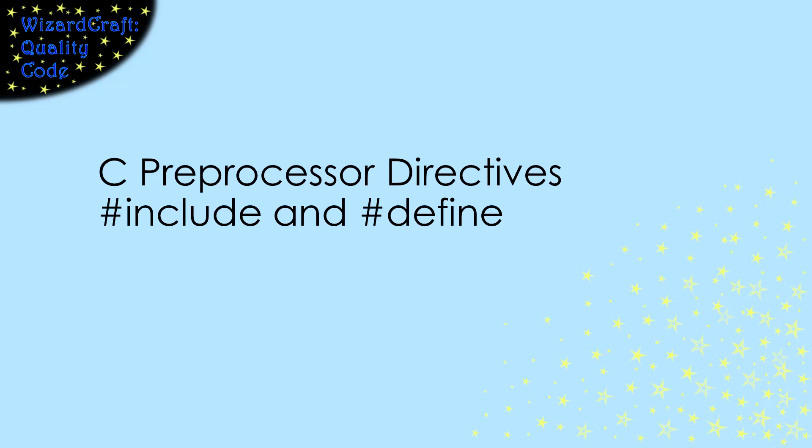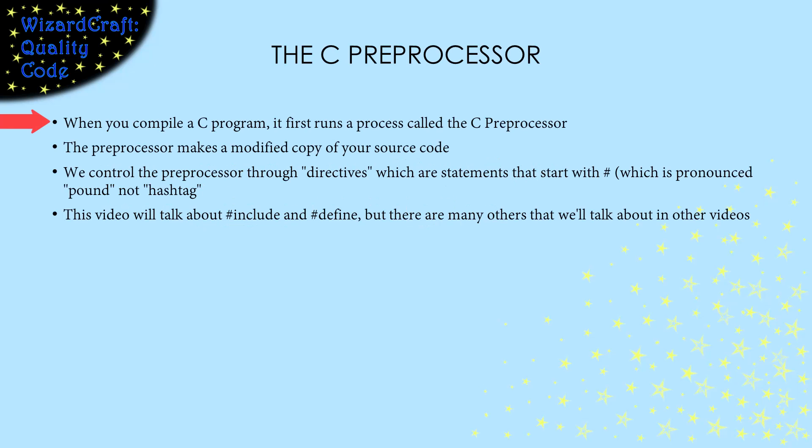The C preprocessor is pretty powerful and can help you write clean code. In this video, I'll talk about how the preprocessor works and the pound include and pound define directives. The C preprocessor is the first thing that happens when you GCC your source code. Its goal is to make a modified copy of your source code following the instructions that you give it in special instructions called directives. These directives start with the pound sign and tell the preprocessor how it should modify your code.